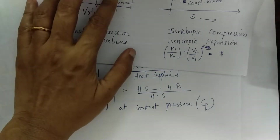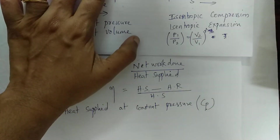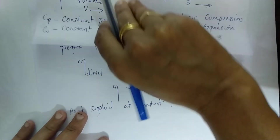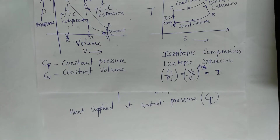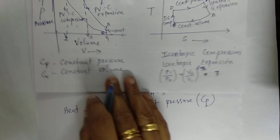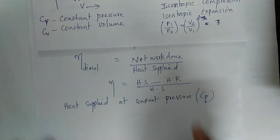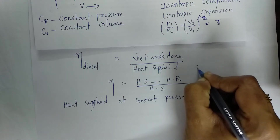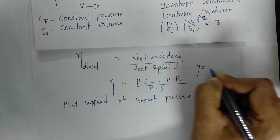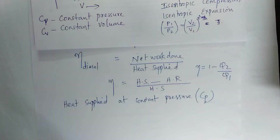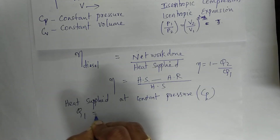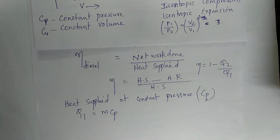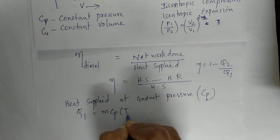We consider 1 mole of the working substance. Writing the equation at constant pressure: Q1 is the amount of heat supplied. Efficiency eta = 1 - Q2/Q1. Q1 is the heat supplied at constant pressure: Q1 = m × Cp × (T3 - T2).